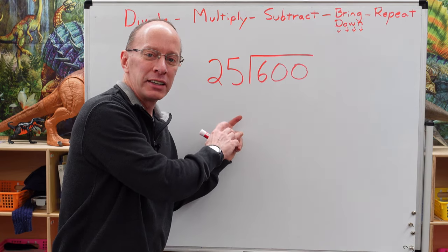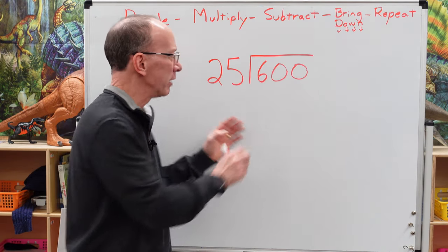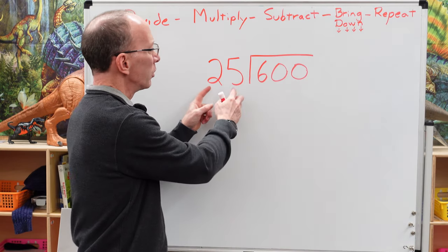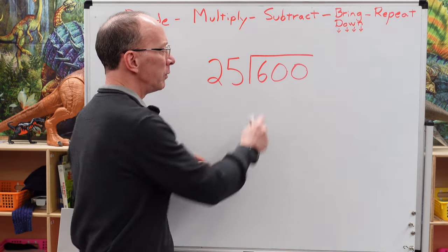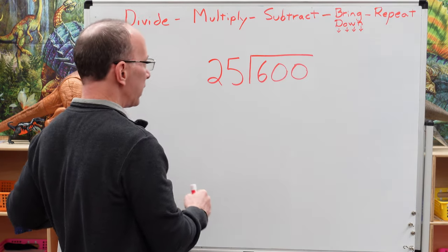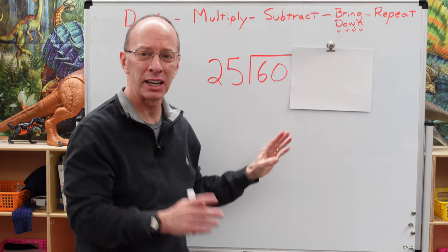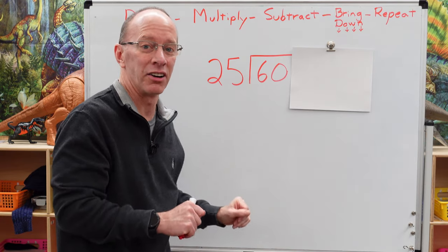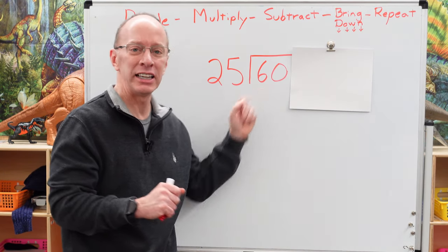25 has to go into 600. We have to figure out how we're going to do that. First of all, can we put 25 into 6? Can't do it, can we? So then we move it over to 60. We're just going to be working with 60 for right now. Sometimes I like to take a piece of paper and cover that up so it doesn't look too scary.